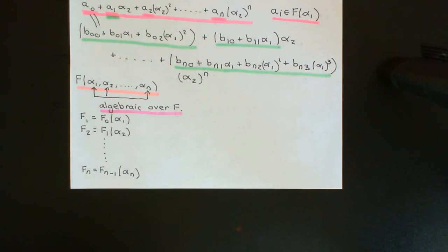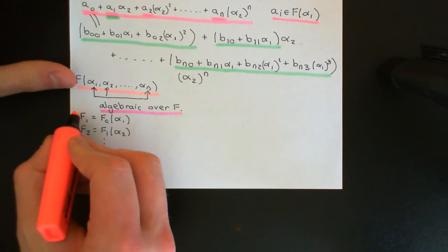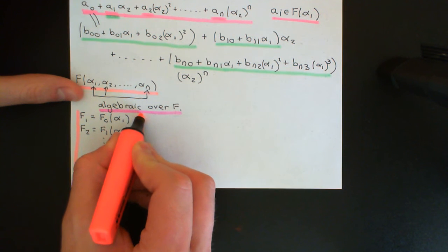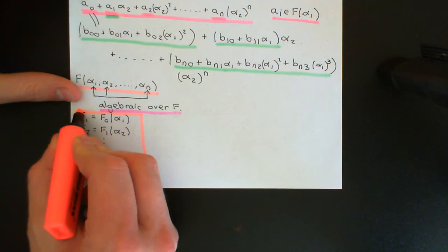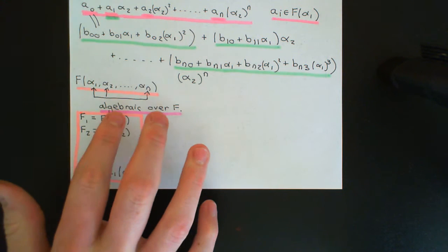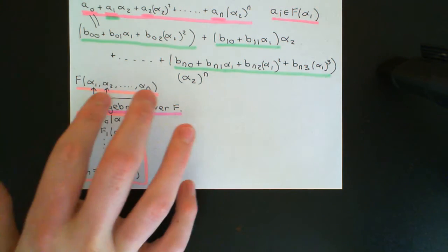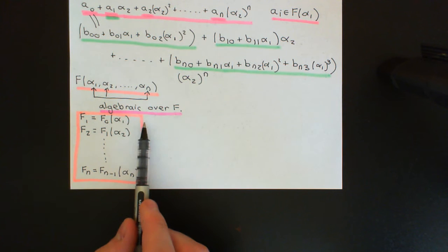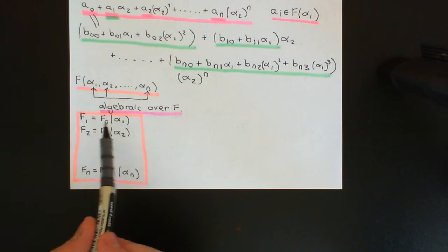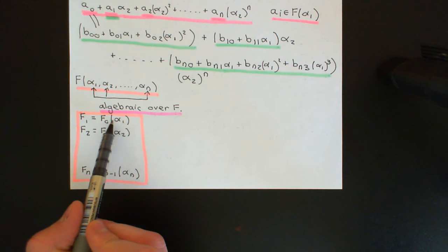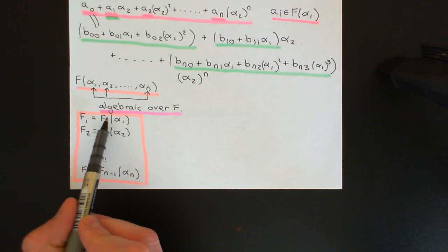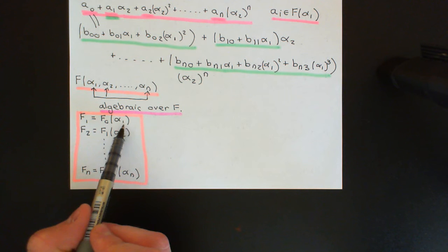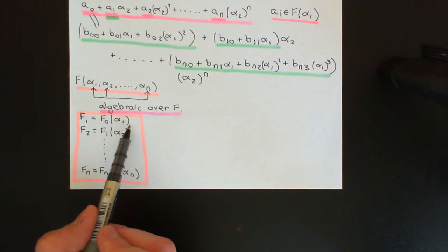There is that recursive series of simple extensions into which we've decomposed the building of our finitely generated field extension. Now we're going to add the additional piece of knowledge that all of these elements are algebraic over F. That's fantastic for the first step, because α₁ is algebraic over F and we're taking a field extension of F generated by α₁, so we completely understand this.